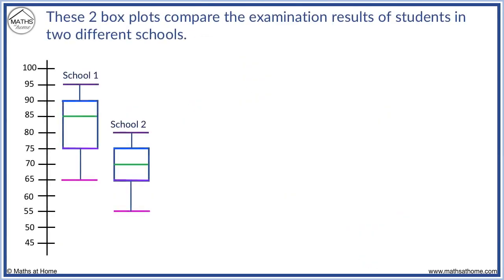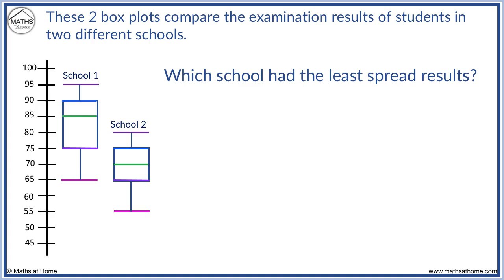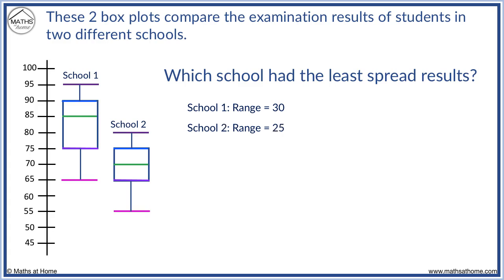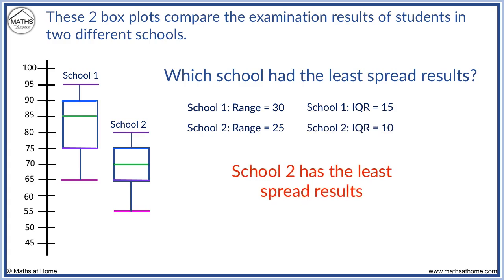These two box plots compare the examination results of students in two different schools. Which school had the least spread results? School 1 has a maximum of 95, a minimum of 65, and therefore a range of 30. School 2 has a maximum of 80, a minimum of 55, and therefore a range of 25. School 1 has a Q3 of 90 and a Q1 of 75, so the interquartile range equals 15. School 2 has a Q3 of 75 and a Q1 of 65, giving an interquartile range of 10. Therefore, School 2 has the least spread results as the range and interquartile range are lower.